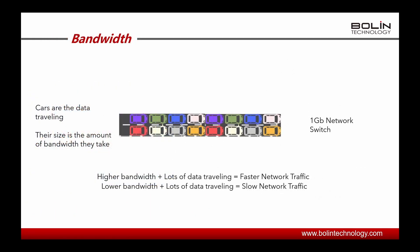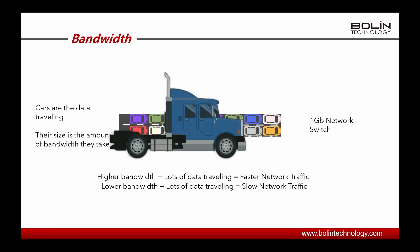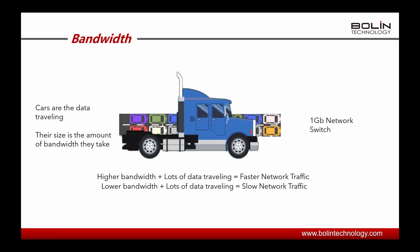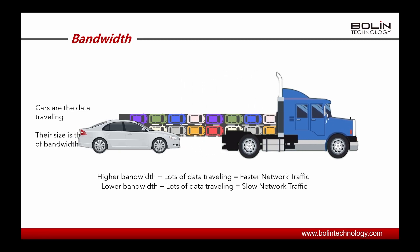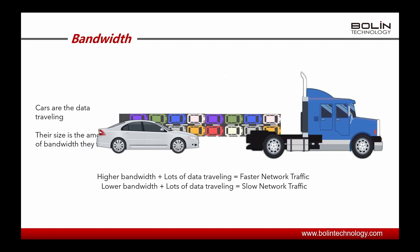Now when we start talking about bandwidth, the best way to think of it is as a freeway. The number of lanes on the freeway is the bandwidth and the size of the cars are the different sizes of data. As more bigger cars start to travel on the freeway, it starts to back up the smaller cars that are traveling much faster and causes traffic.